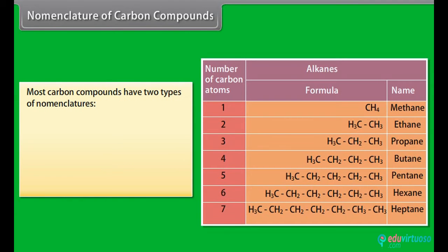The system of assigning a proper name to a particular carbon compound is called nomenclature. Most carbon compounds have two types of names.